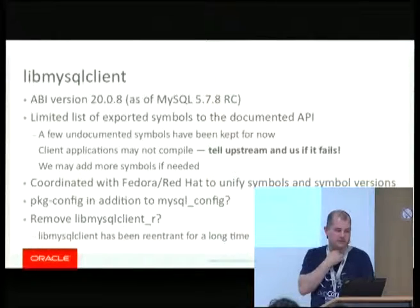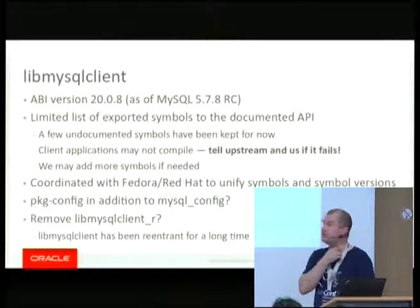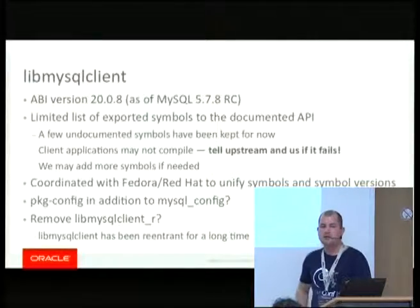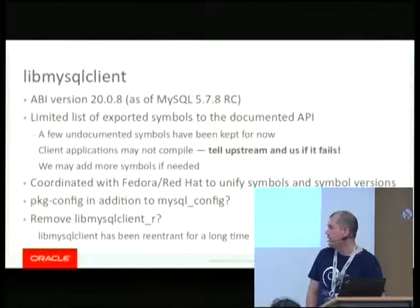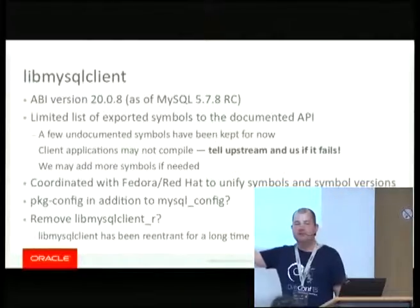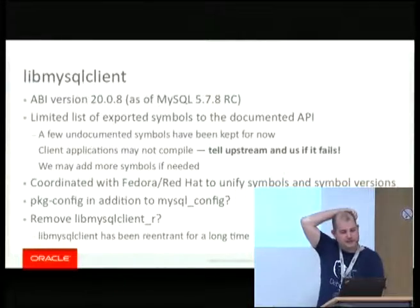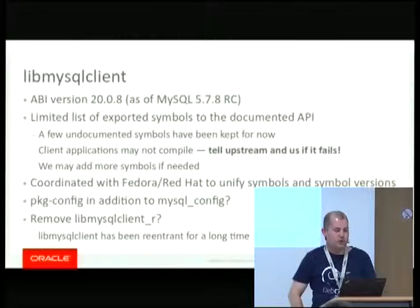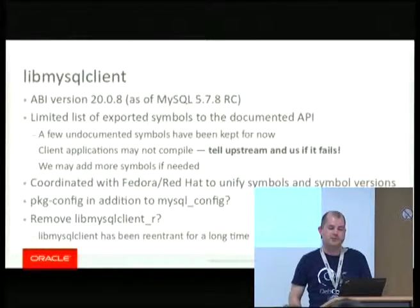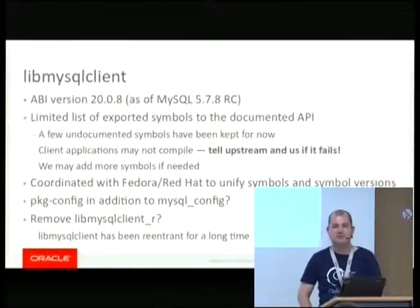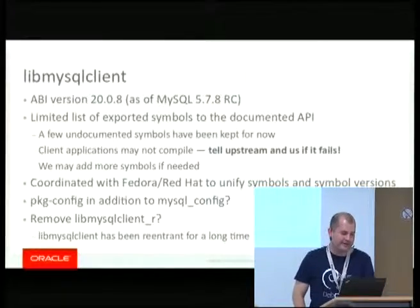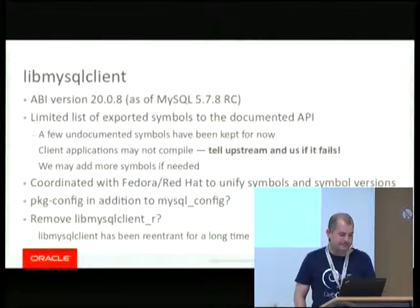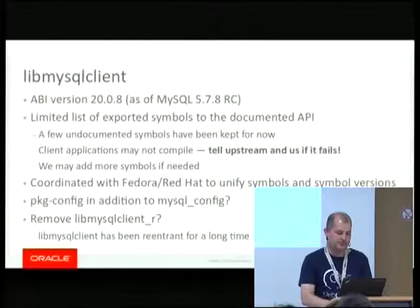Some things we haven't done yet is add package config files in addition to the traditional MySQL config scripts, but we're thinking about doing that. If you're using the reentrant libmysqlclient_r library, please stop — the normal libmysqlclient has been reentrant for many years. There's no reason to use the underscore _r; it's just a symlink to the normal library. But finally in 5.7 we might remove that, which may cause some applications to fail.